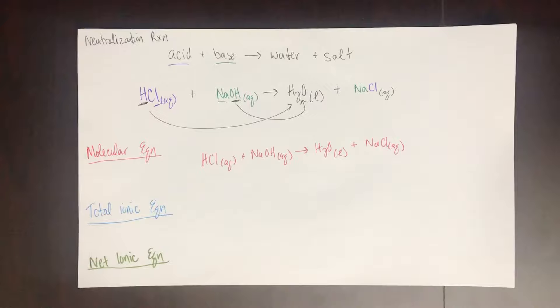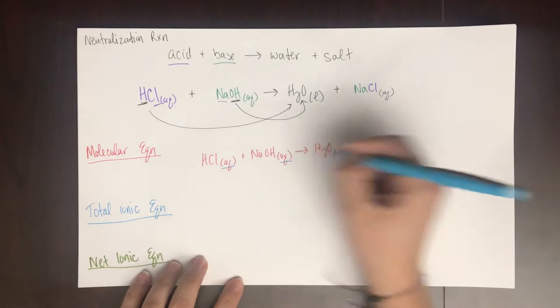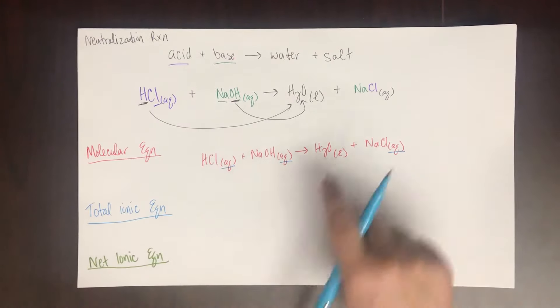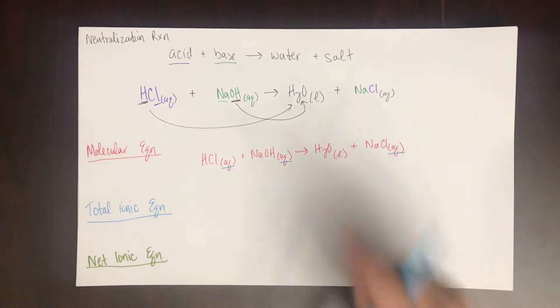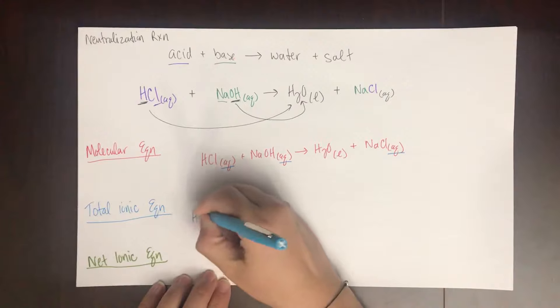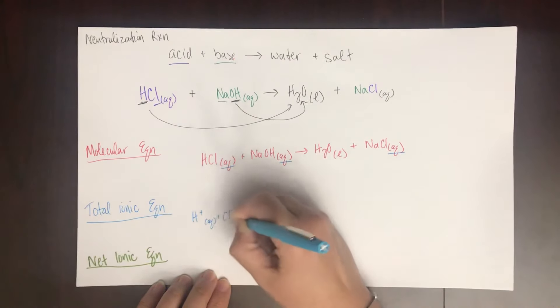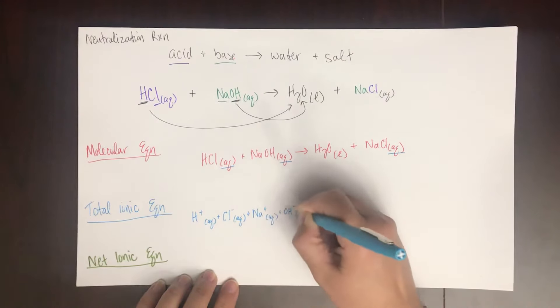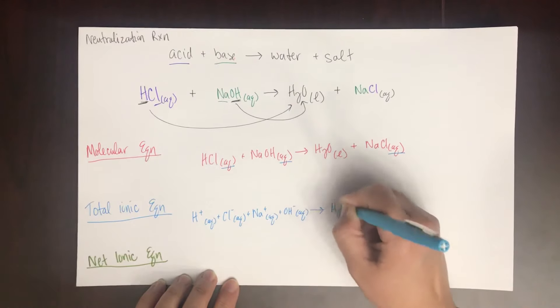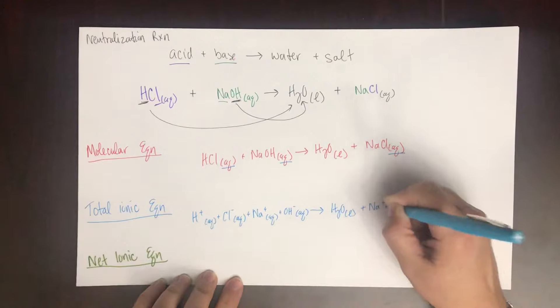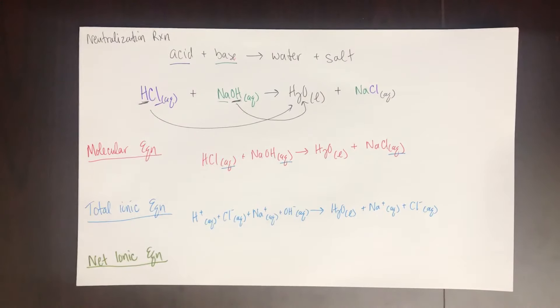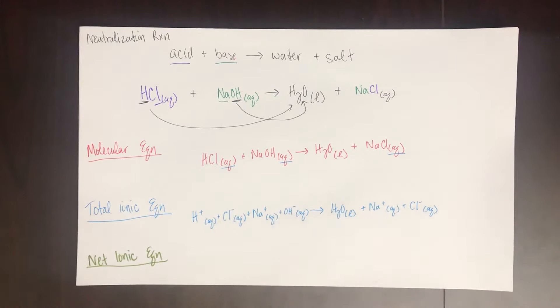The total ionic equation is when we break apart everything that is aqueous. So everything that's aqueous is going to break apart into ions in the total ionic equation. Things that are not aqueous like liquids and solids will not break apart. So that's my total ionic equation. Notice everything that was aqueous broke apart into its ions. Water, which was not aqueous, stayed together.